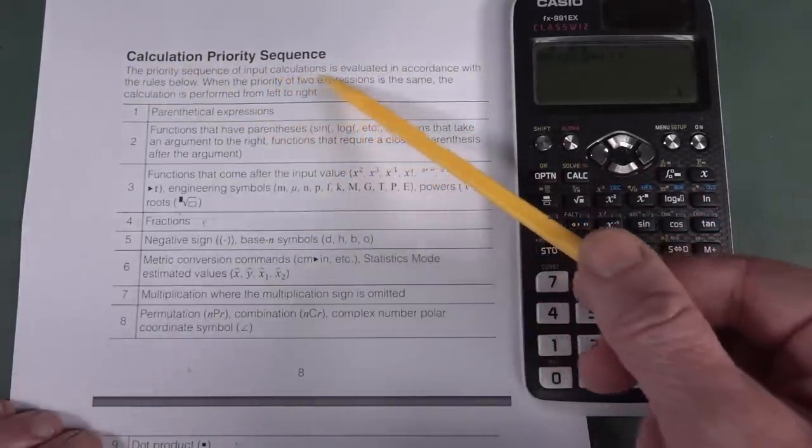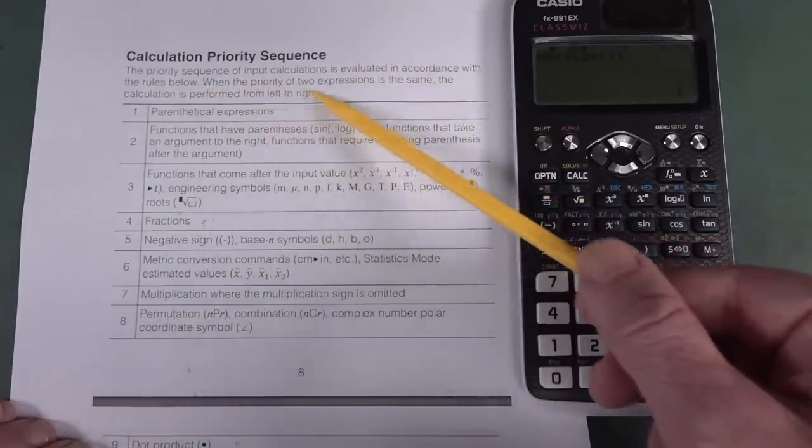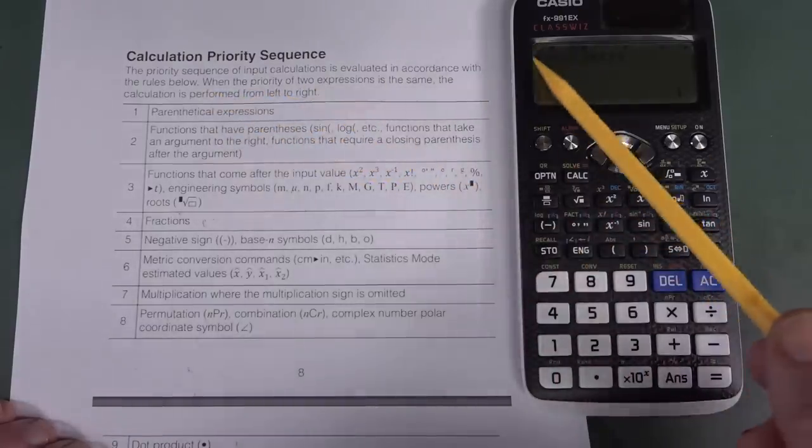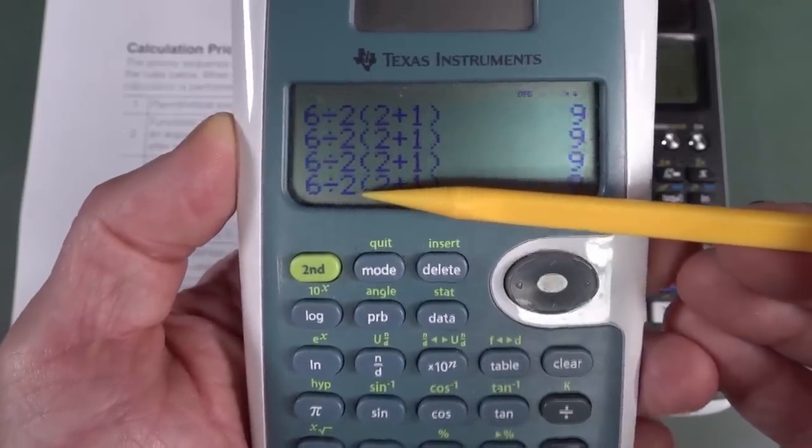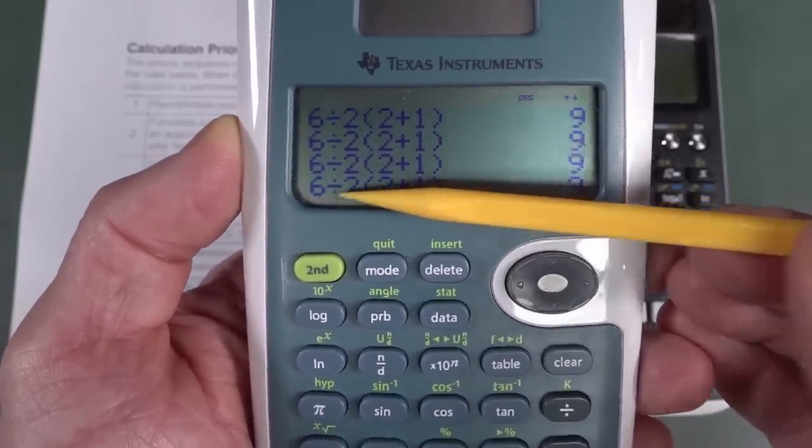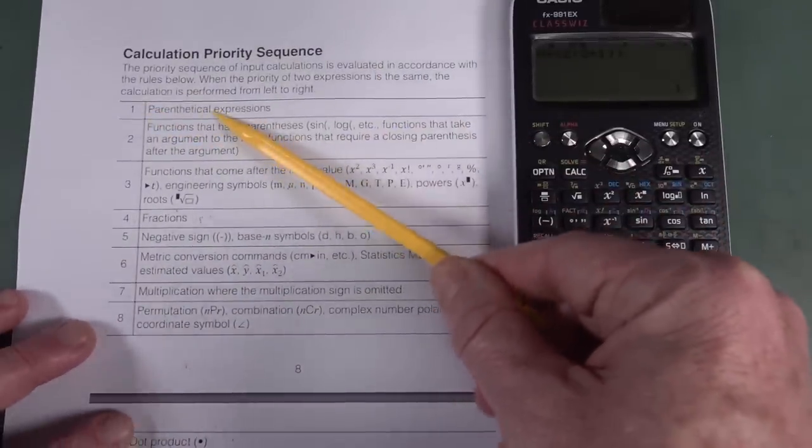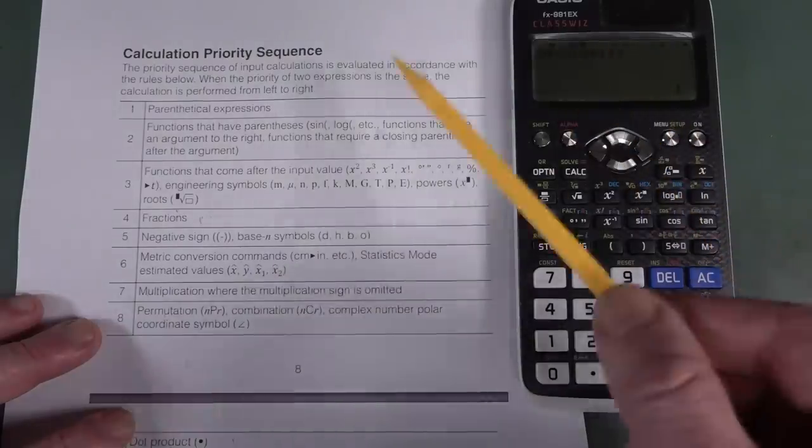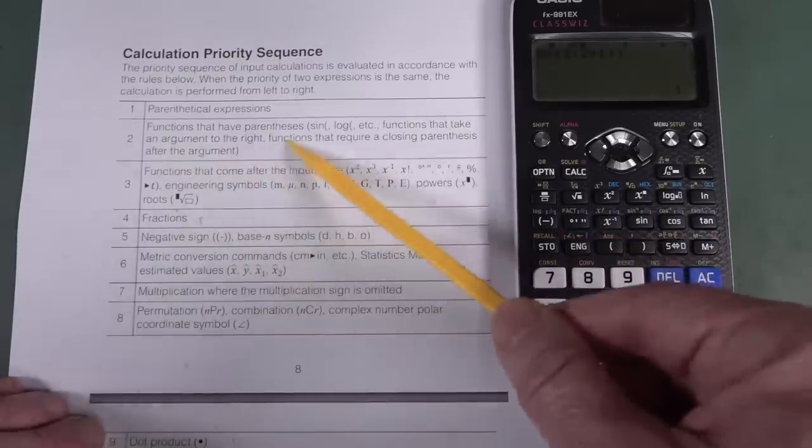But why does it do that? And this is what you have to look for in your calculator manual for whether or not your calculator is actually going to do this. Calculation priority sequence could be called order of operations or something like that. The priority sequence of input calculations is evaluated in accordance with the rules below. When the priority of two expressions is the same, the calculation is performed from left to right. So you might think that surely an implied multiplication in here is basically the same priority as a divide here. But it's actually not.